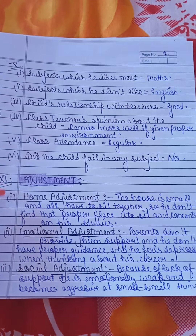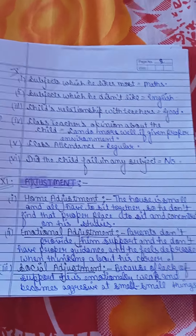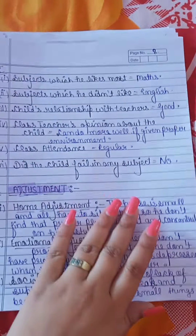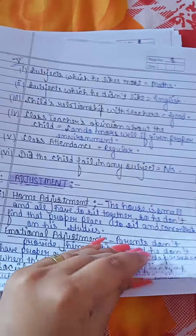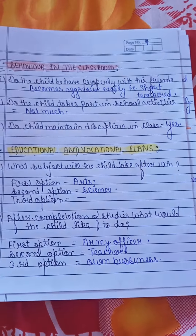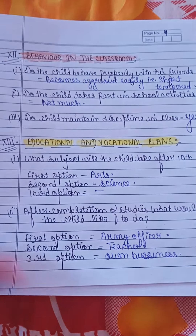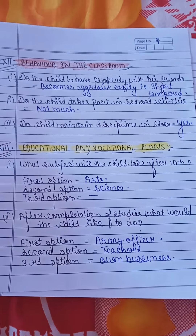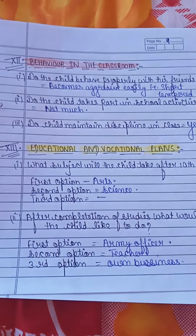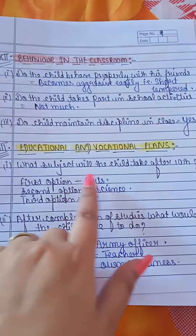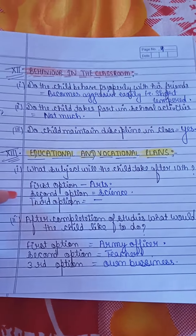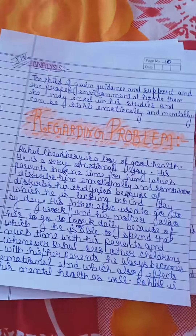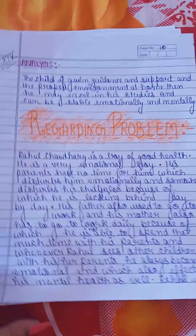After that, which subject the child liked most, which subject they didn't like — all these along with attendance. Then there will be adjustments: home adjustments, emotional, social — where are the actual problems and how the child adjusts. We will explain all that. Then there will be behavior in the classroom — 2-3 questions, you can create more. Then education and vocational plans — after the study is completed, which subjects the child wants to take.